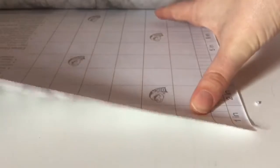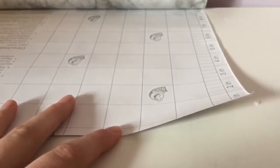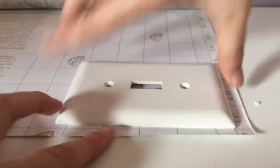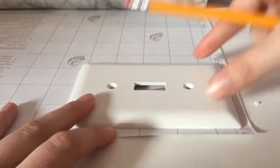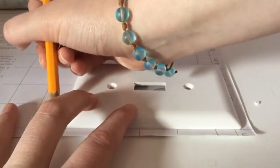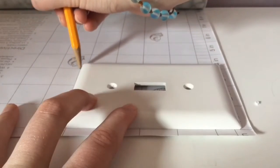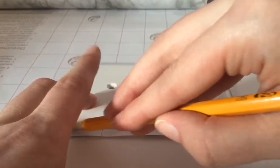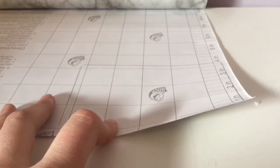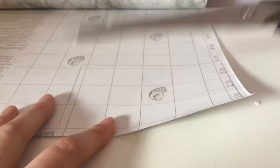Roll out your contact paper and place your light switch cover on top. Now take your pencil and trace around your light switch cover. Like so. And then you can cut out your contact paper.